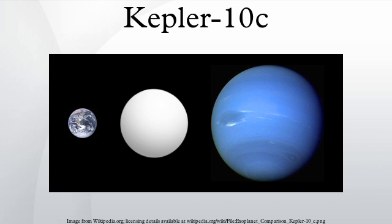Kepler-10c is the outermost of the two known planets of Kepler-10, completing one orbit of the star every 45.29485 days at a distance of 0.2407 AU. The inner planet, Kepler-10b, is a rocky planet that orbits every 0.8 days at a distance of 0.01684 AU. Kepler-10c's equilibrium temperature is estimated at 584 kelvins, almost four times hotter than Jupiter's. The planet's orbital inclination is 89.65°, or almost edge-on with respect to Earth and to Kepler-10. Transits have been observed at points where Kepler-10c has crossed in front of its host star.